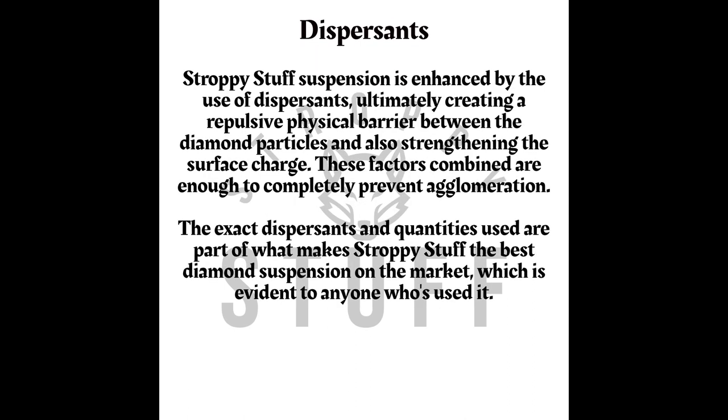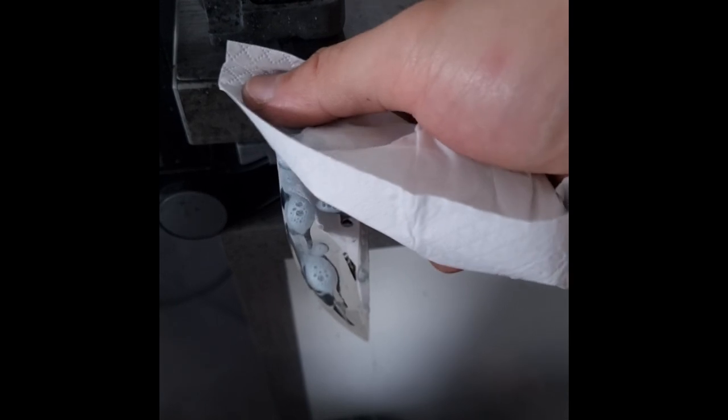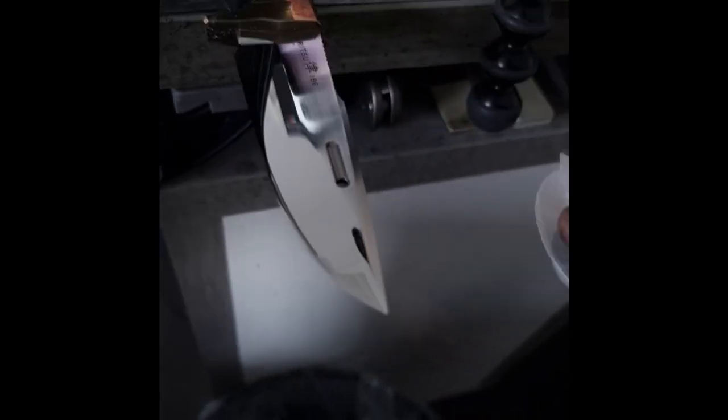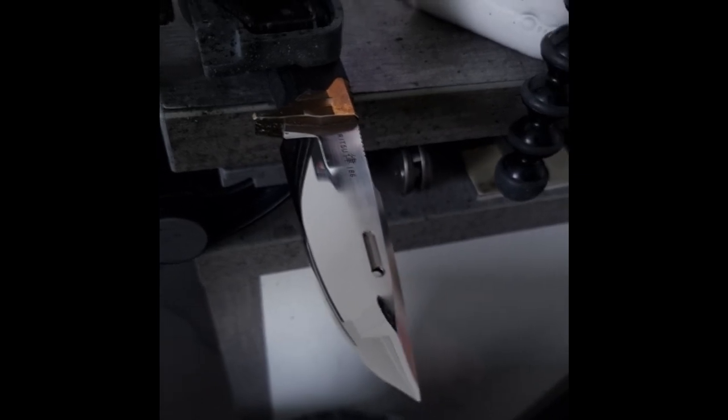I made an overview post on Instagram talking about how we avoid agglomeration with stroppy stuff, so you can go and have a look at that. But I thought there's no better way to prove that there was no agglomeration than to show it, and the easiest way to show it is with a perfect mirror polish.